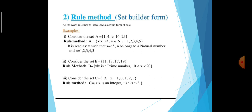One more example: consider the set B = {11, 13, 17, 19}. These are the prime numbers between 10 and 20. So B = {x : x is a prime number, 10 < x < 20}. Consider the set C = {-3, -2, -1, 0, 1, 2, 3}. Using the rule method (set builder form): C = {x : x is an integer, -3 ≤ x ≤ 3}.